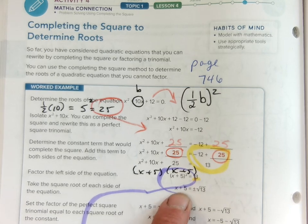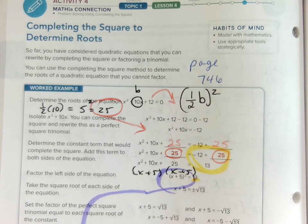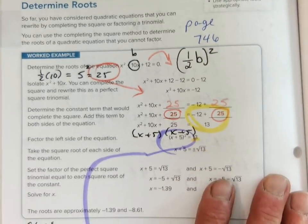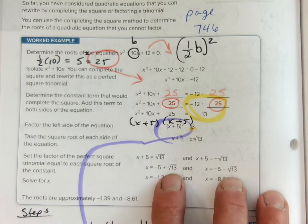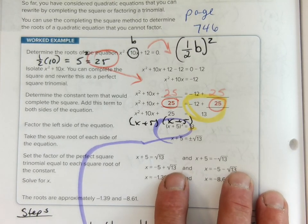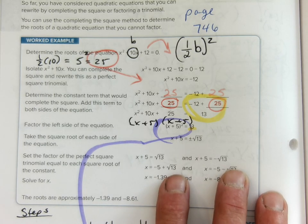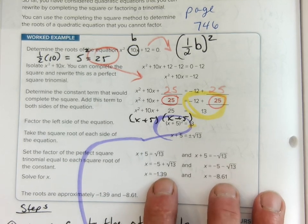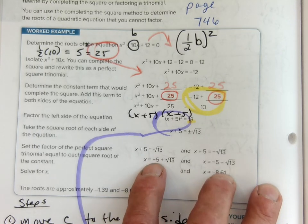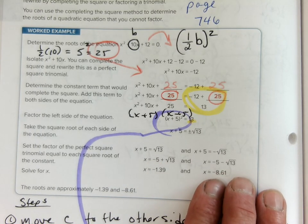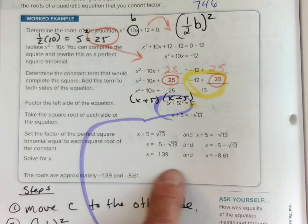So square root of 13. We can keep it in root form or we can actually find out what the square root of 13 is on our calculator. Hi guys. How are you? I'm recording but that's okay. So then I add 5, and I get these two answers.